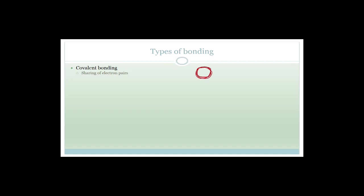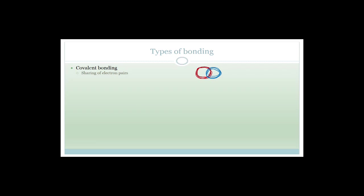Now let's talk about covalent bonding. Covalent bonding is the sharing of electrons. Let's say you've got one atom here and a second atom over here. These colored lines I've drawn — the red and the blue — are orbitals. Orbitals are where you are most likely to find an electron.